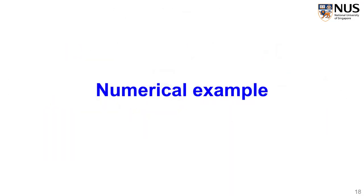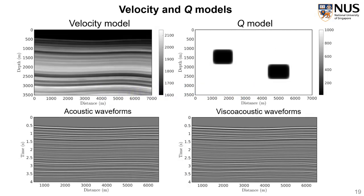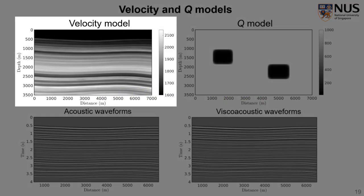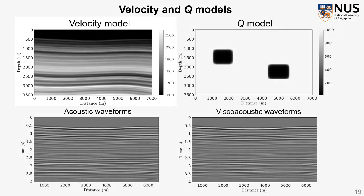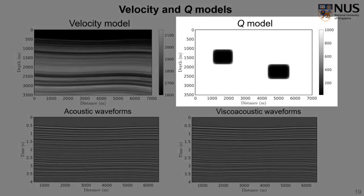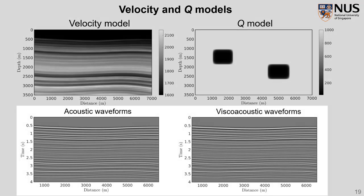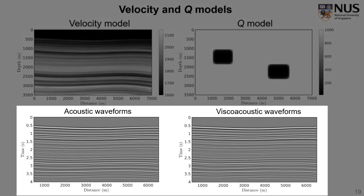You can see the velocity model looks like this, where many thin layers causing the closely located reflectivities, which basically is the scattering Q situation. The Q model contains two rectangular anomalies like this, and the zero-offset acoustic and viscoacoustic waveforms are simulated using case-based low-rank decomposition method. We can visually see some attenuation effects in the viscoacoustic waveforms in comparison with the acoustic waveforms.